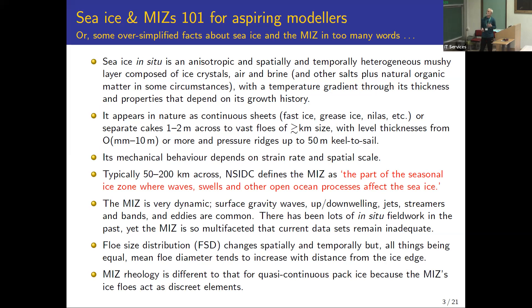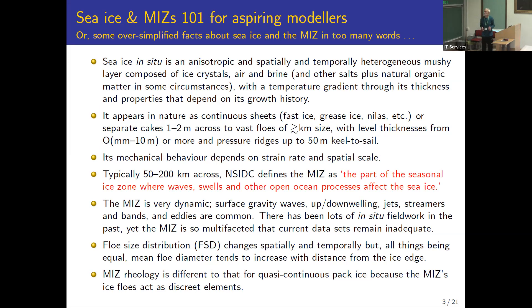Sea ice is very complicated in situ. It's anisotropic, spatially and temporally heterogeneous — a mushy layer composed of ice crystals, brine, and other salts. It can include natural matter in some circumstances. Important for wave-ice interaction, it has a temperature gradient between the top and the bottom, and depends on growth history. It appears as continuous sheets — fast ice, which can be very wide, as well as grease ice and nilas.